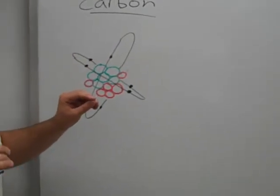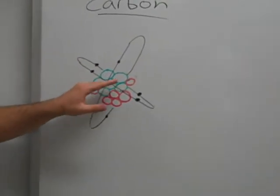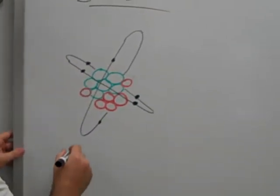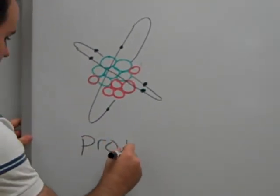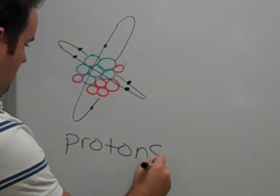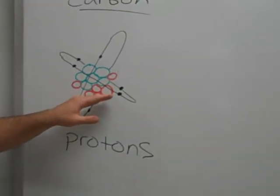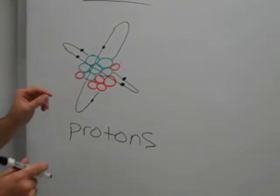Atoms are made up of different types of particles, and the green particles here are what we call protons. And the red particles here represent neutrons.